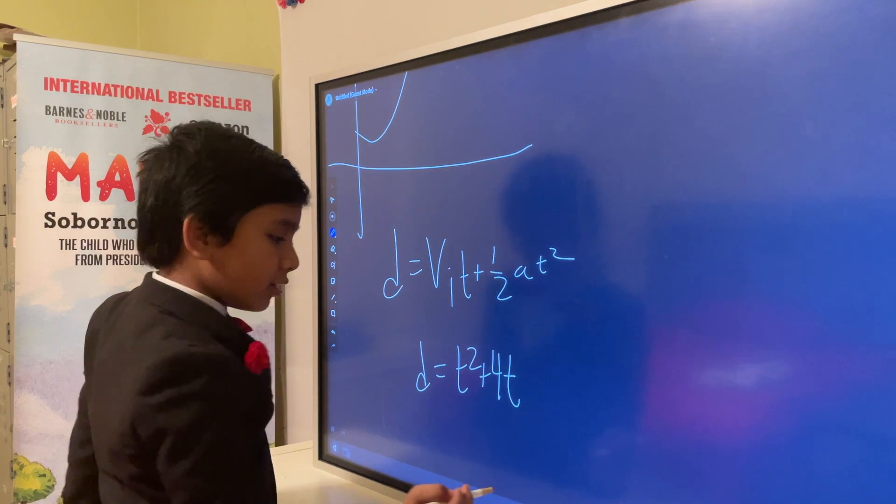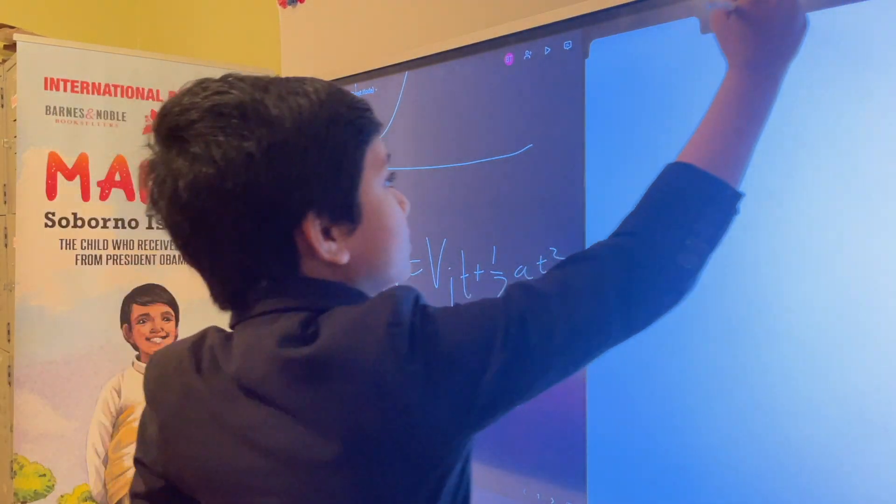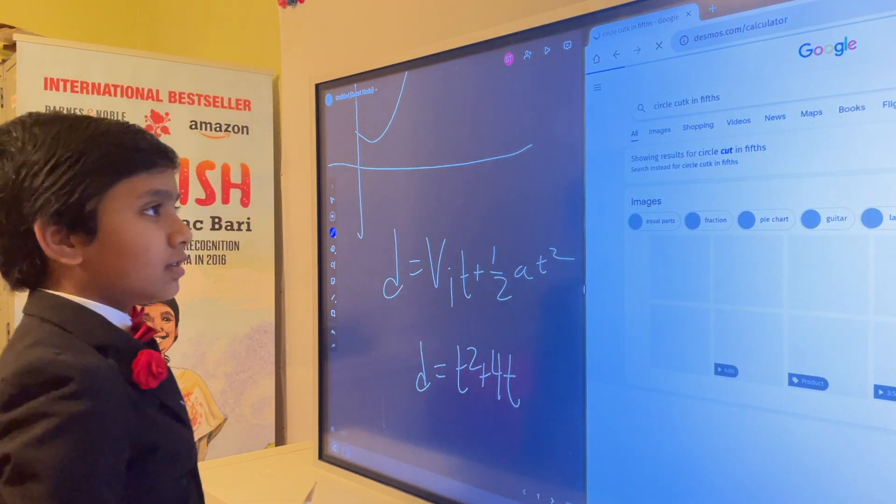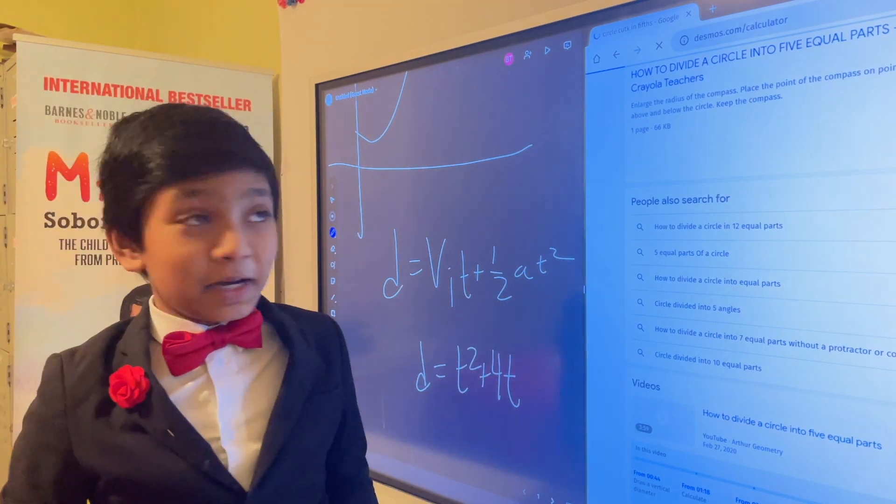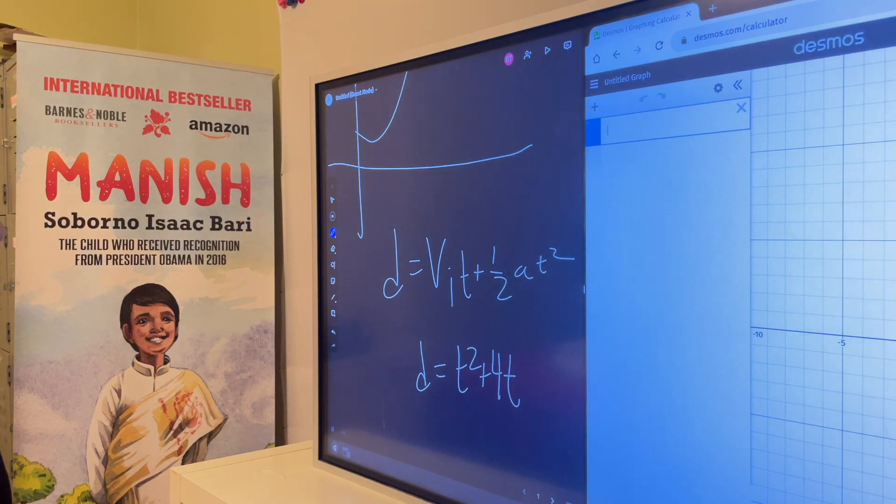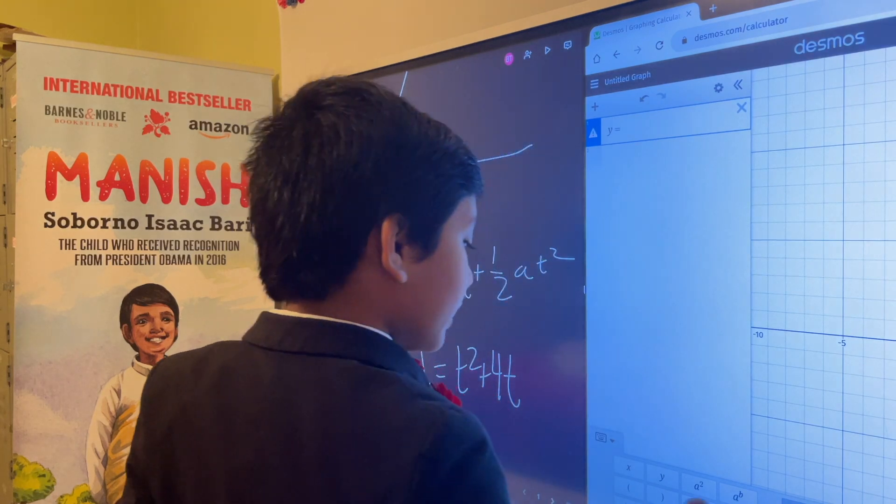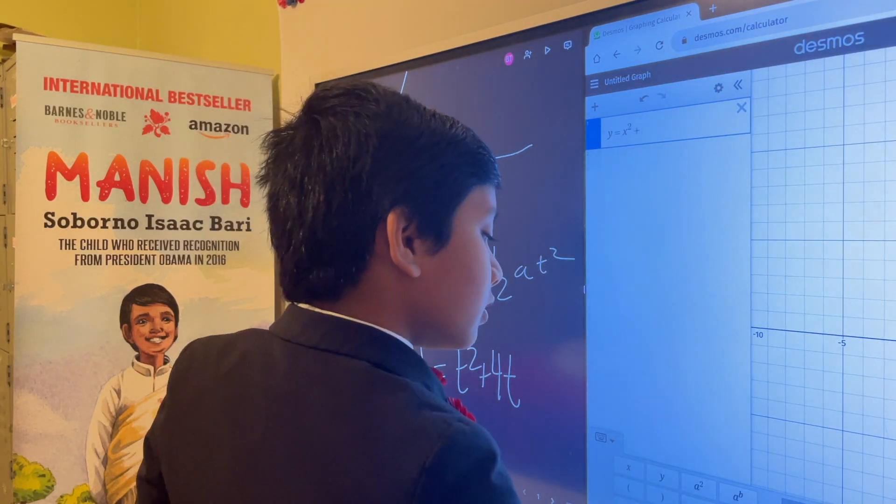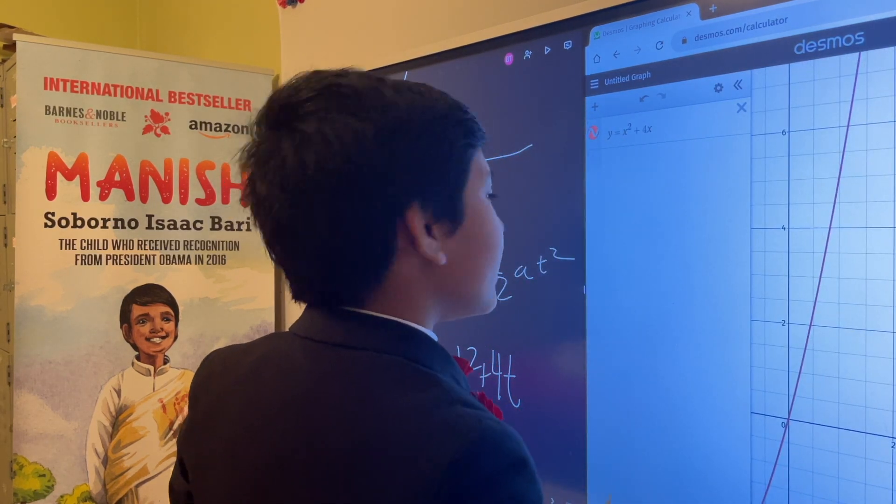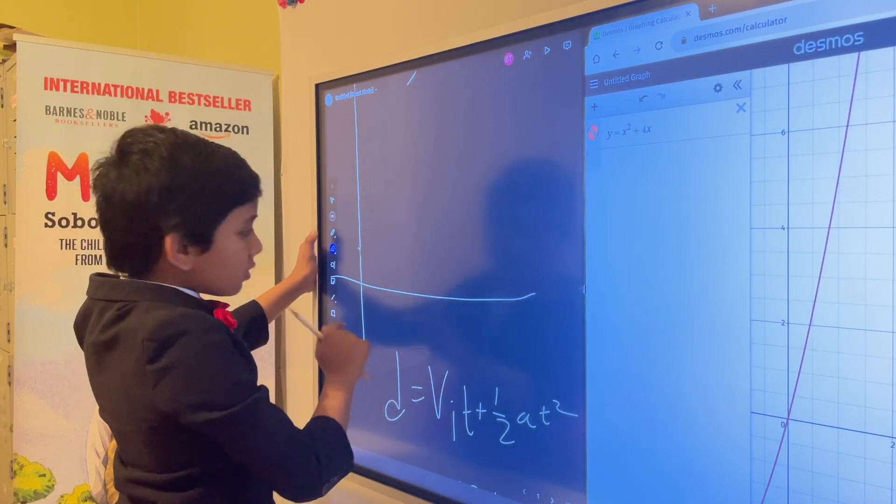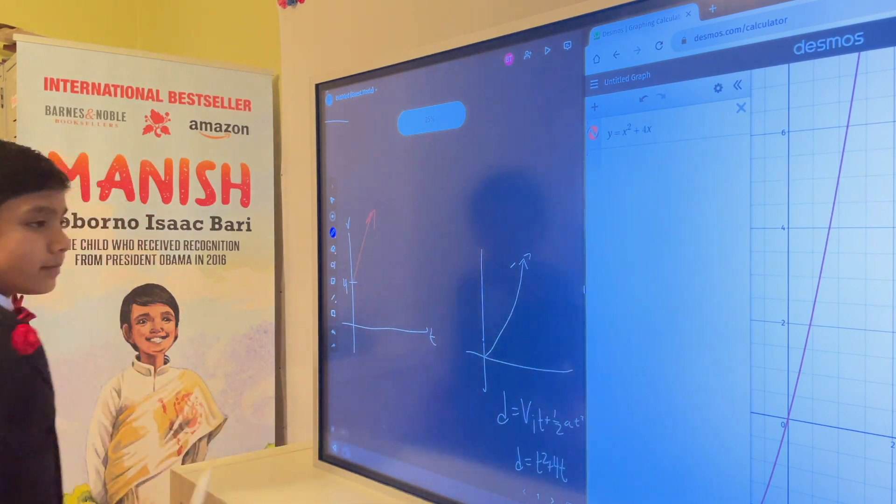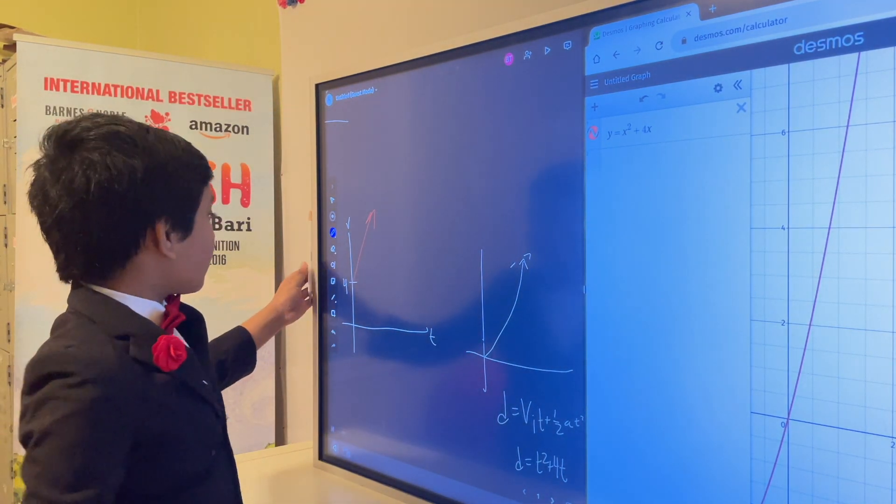Should we pull up Desmos? Yes, we should. Let's take the equation y equals x squared plus 4x. It looks a bit like a linear equation until you realize it isn't, so it will look something like this.